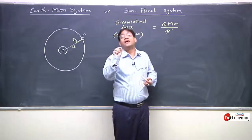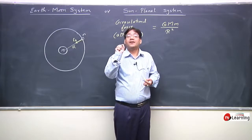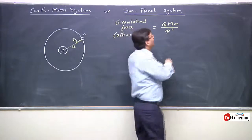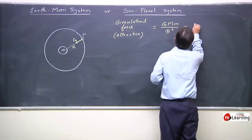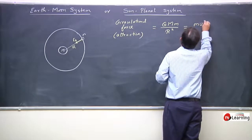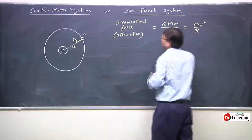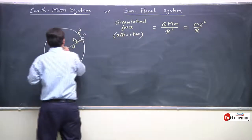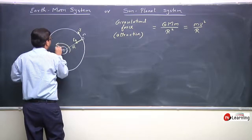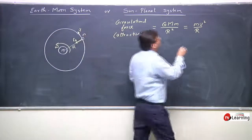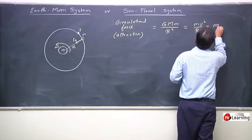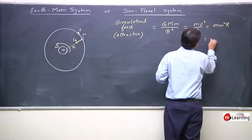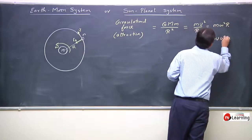This gravitational force would provide the necessary centripetal force, and this would be equal to MV squared by R, where velocity of this body is V. Its angular velocity is omega. This would be equal to M omega squared R, or this would be equal to M V omega.